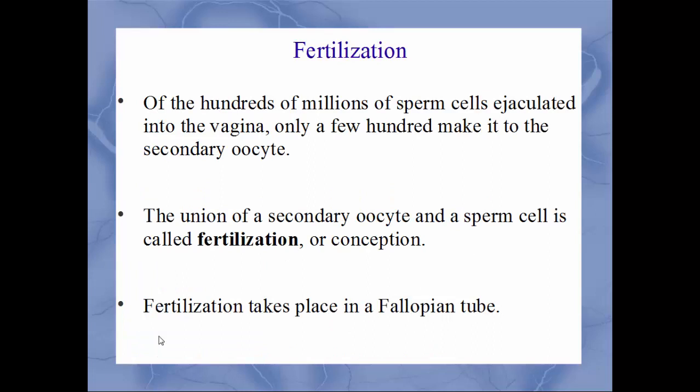We'll talk about fertilization. Of the hundreds of millions of sperm cells that are ejaculated from the male, only a few hundred will actually make it to the secondary oocyte, and only those hundred or so will have a chance at fertilizing that egg. That union of the secondary oocyte and the sperm cell is called conception or fertilization — those terms mean the same thing. Fertilization will occur in the fallopian tube, not in the uterus.